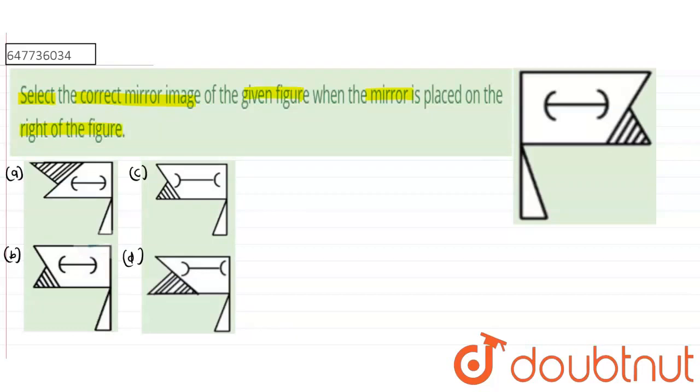So guys, in this question we have a figure with a mirror placed on the right of the figure. So, we need to choose the correct mirror image from the four options given here. So, we solve this question.